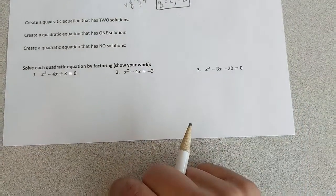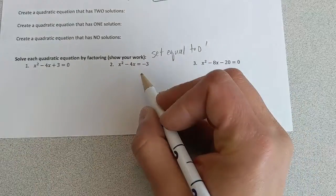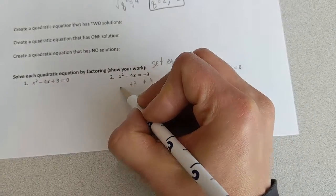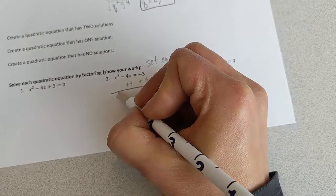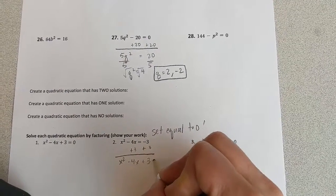For these, when you're solving by factoring, remember to set equal to 0. So, for instance, for this one, you're going to have to add 3 to both sides first, and then you've got x squared minus 4x plus 3 equals 0.